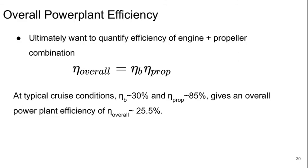Gas turbine engine efficiencies can be significantly higher than this, and it's one of the reasons they're uniformly used in higher performance and larger aircraft. That's all for today. We'll talk more about some of the details of the design characteristics of spark ignition engines in the next lecture.